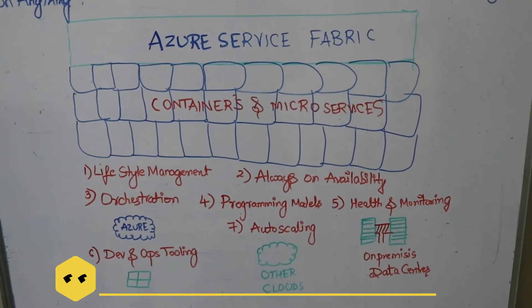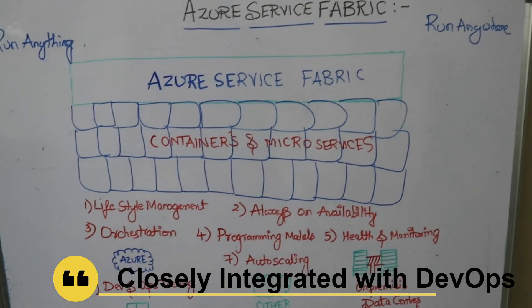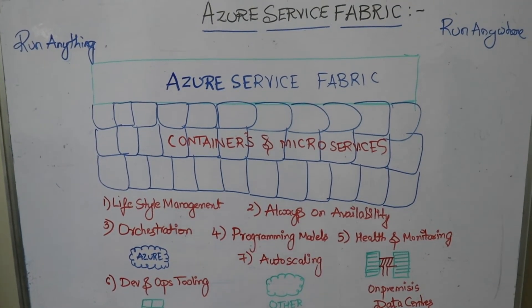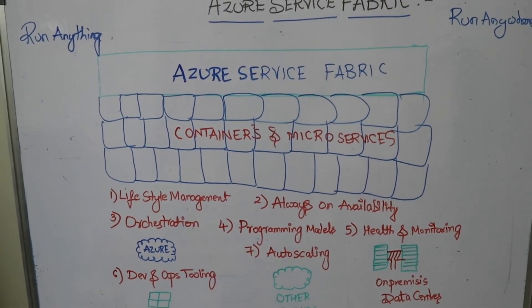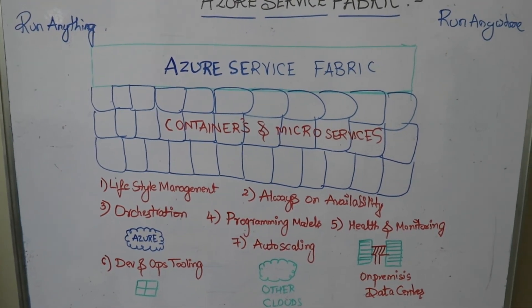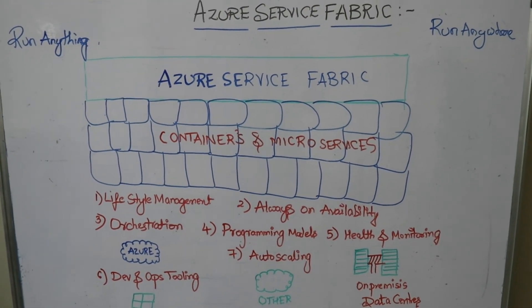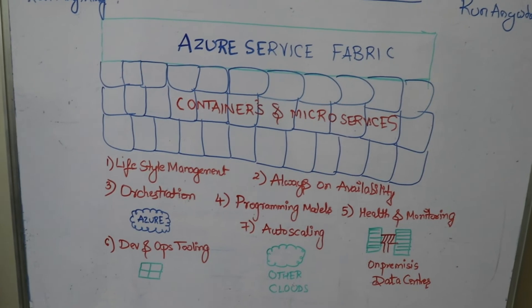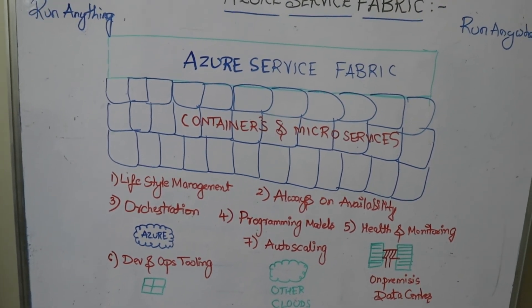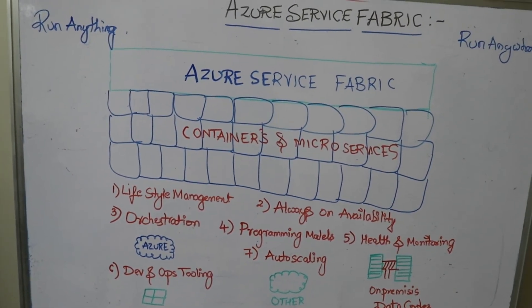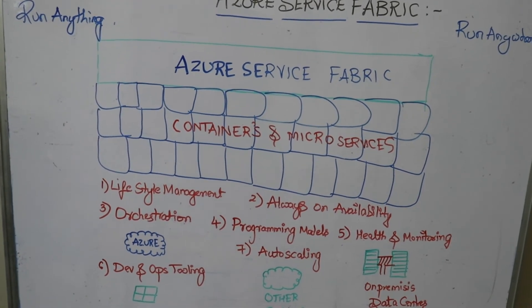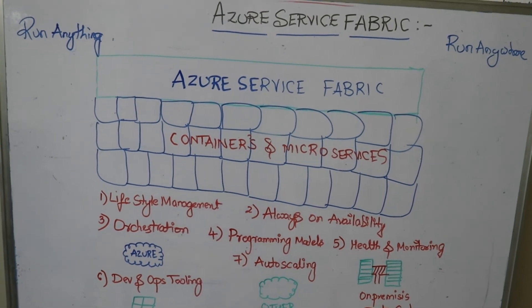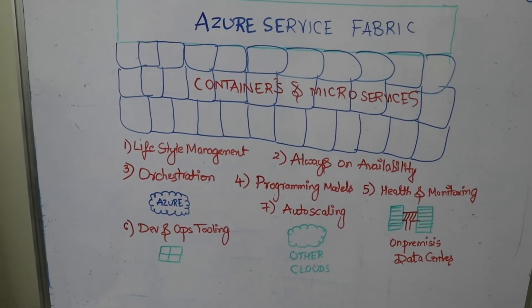What about Dev and Ops tooling? Since we are talking about Azure Cloud and Azure DevOps, obviously there is a task which is integrated — it's very closely integrated with the Azure DevOps portal as well. Whatever the task — you might be seeing the pipelines — there is always a task associated with Azure Service Fabric. If it's closely integrated with DevOps, it's closely integrated with the code. If any kind of triggering is required, it's closely integrated with the code. That's what I talk about with Dev and Ops tooling.